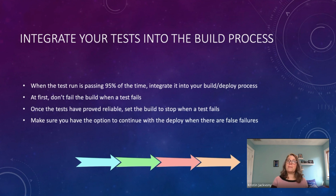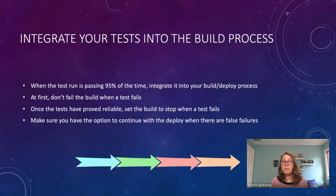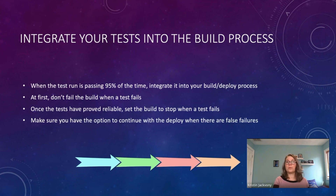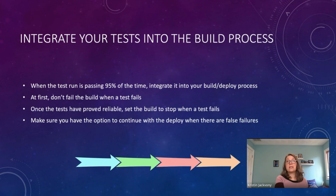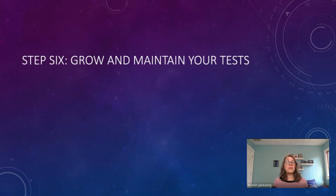When thinking about deployments, make sure you have the option to continue the deployment if there are false failures. At my company we often do deployments late at night, and one or two people are on call. If you get paged because tests are failing, then you run the tests manually and see there's nothing wrong — it must be a flaky test — you don't want to have to cancel the deploy. You want to be able to say: the test is passing manually, so let's continue with the deploy.